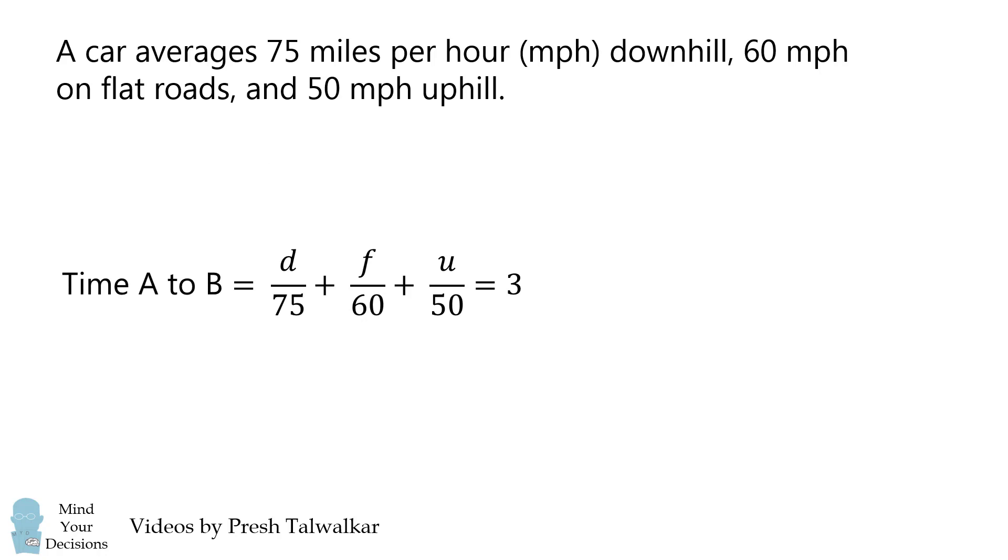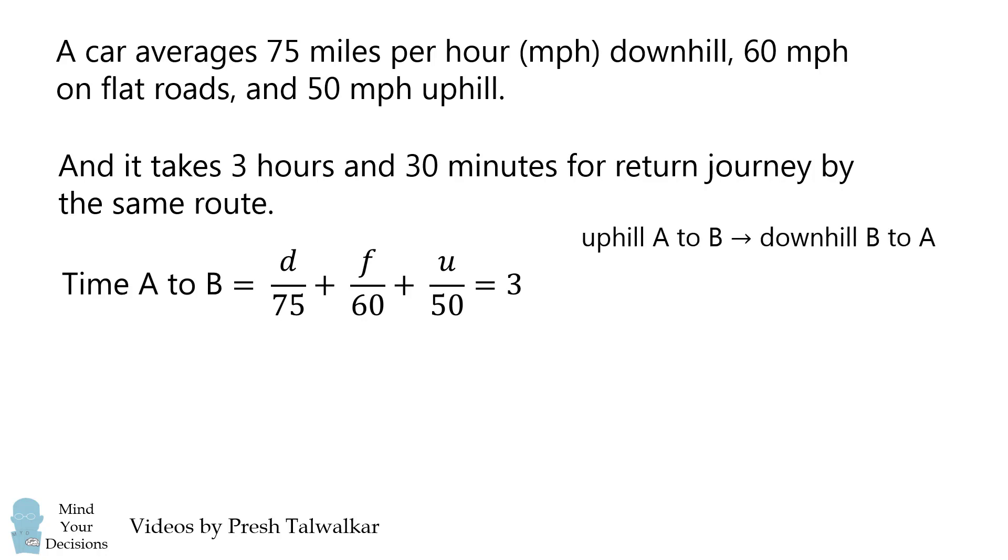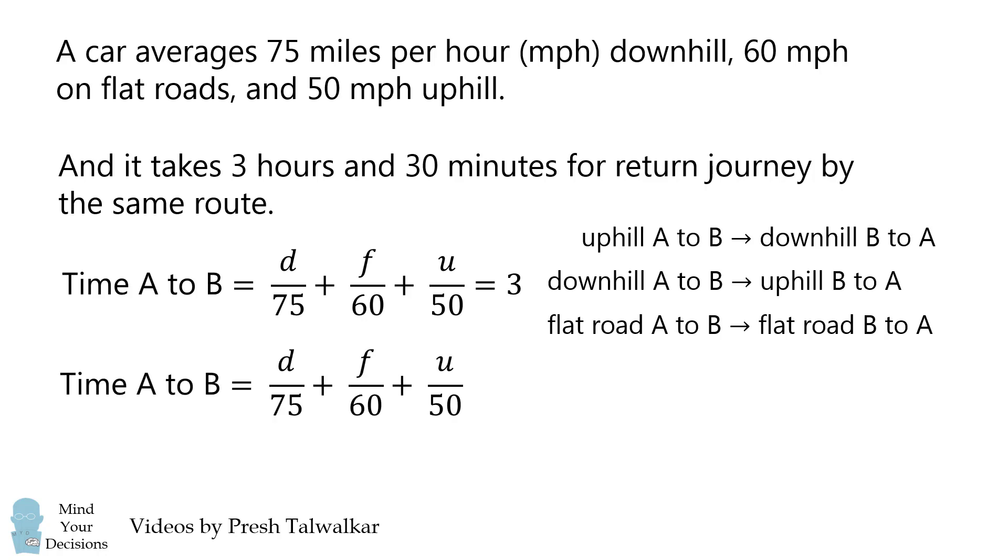So now, how do we write a similar equation going from B to A? Well, notice that if you're going uphill from A to B, it'll be downhill going from B to A. Similarly, if you're going downhill from A to B, it'll be uphill going from B to A. The flat roads will be the same on either one-way journey. So to get the time from B to A, we're going to swap the variables D and U.